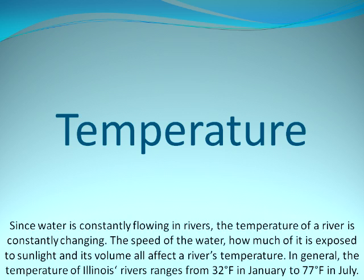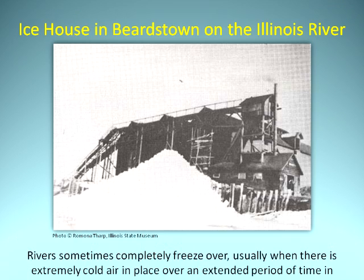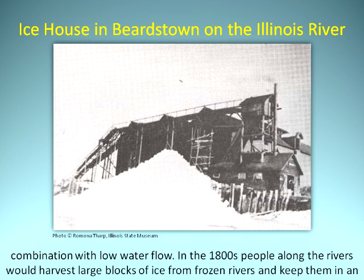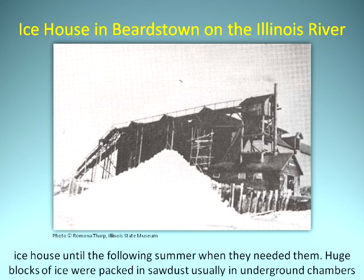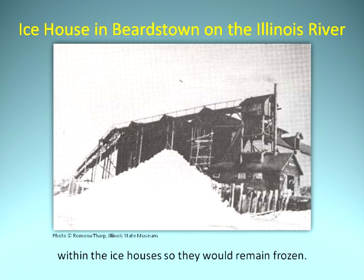Temperature: Since water is constantly flowing in rivers, the temperature of a river is constantly changing. The speed of the water, how much of it is exposed to sunlight, and its volume all affect a river's temperature. In general, the temperature of Illinois' rivers ranges from 32 degrees Fahrenheit in January to 77 degrees Fahrenheit in July. Rivers sometimes completely freeze over, usually when there is extremely cold air over an extended period combined with low water flow. In the 1800s, people along the rivers would harvest large blocks of ice from frozen rivers and keep them in an ice house until the following summer. Huge blocks of ice were packed in sawdust, usually in underground chambers, within the ice houses so they would remain frozen.